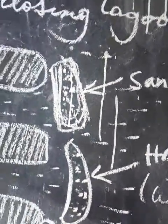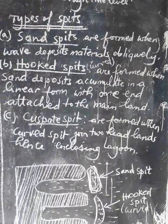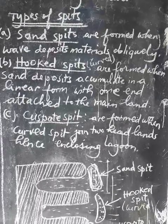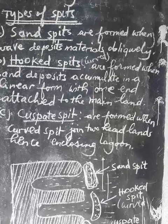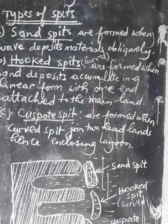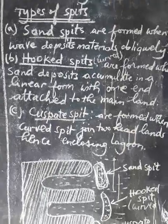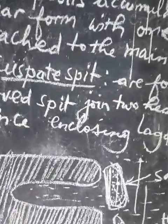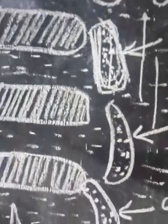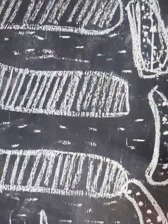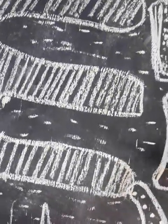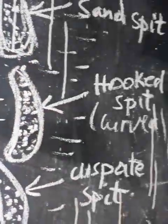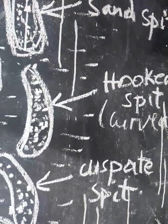Another type is a hook spit, otherwise called a curved spit. When a wave deposits material in a curved way, the depositional materials take the shape of a curve. A spit that curves like this is called a hooked or curved spit.